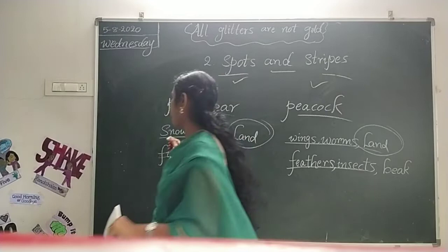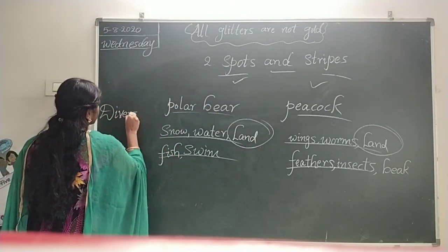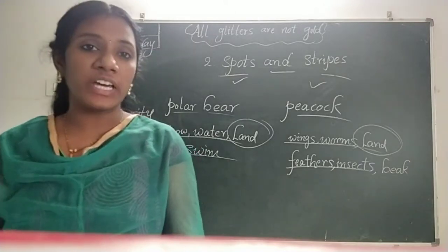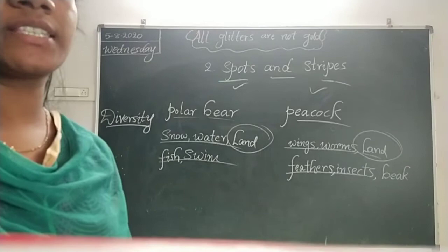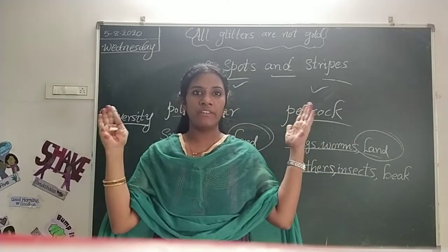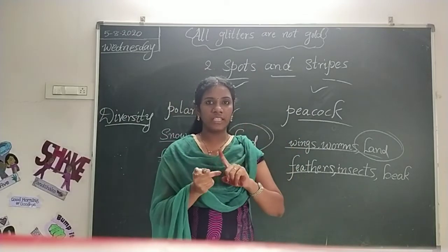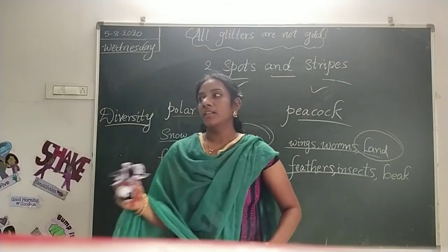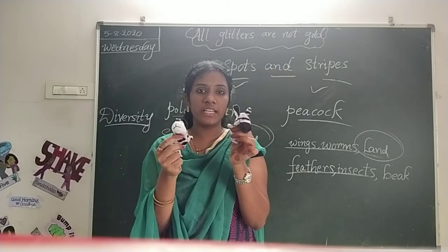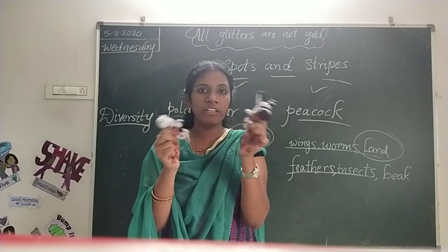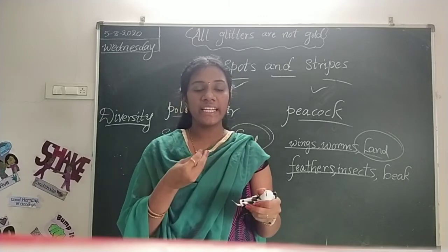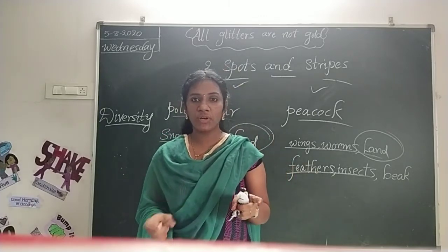Now we have to know about diversity. What is diversity? We observe many animals in our surroundings — from small animals to huge elephants. Each of these animals is different from one another. See the differences between a puppy and a zebra — one is small, one is big; they look different, move different, and eat different food. Such a wide range of differences is known as diversity.